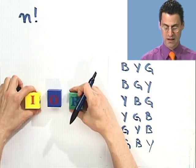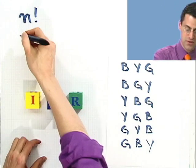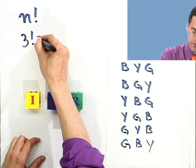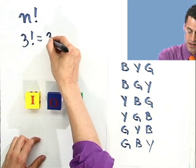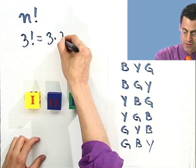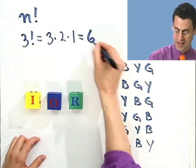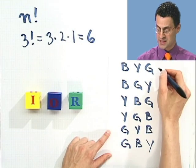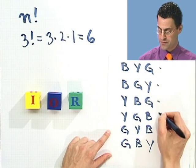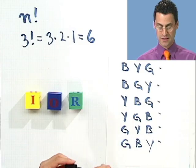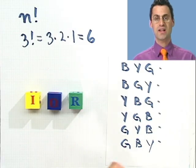Let's check that. Here I have three things. What's three factorial? Three factorial is three times two times one, which equals six. And we have six orderings: one, two, three, four, five, six. So if you just want to know all the different ways of rearranging a collection of things, it's just that number of things factorial.